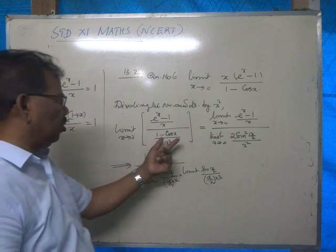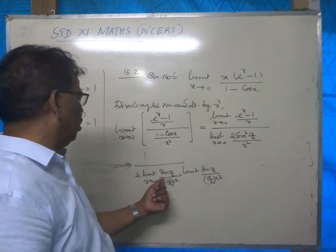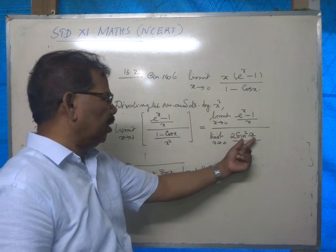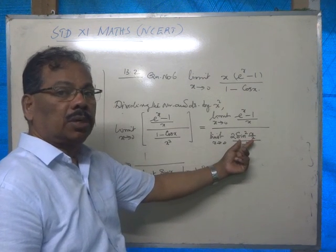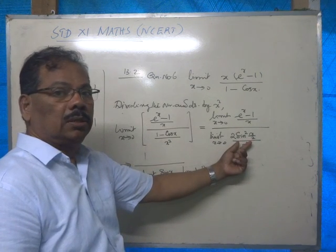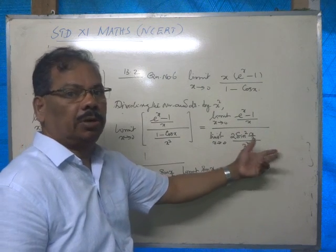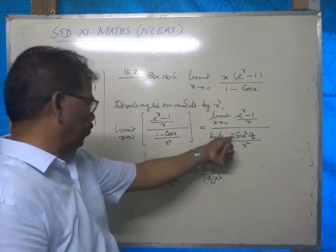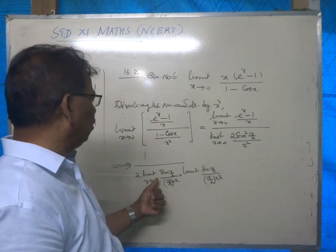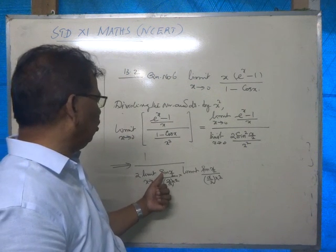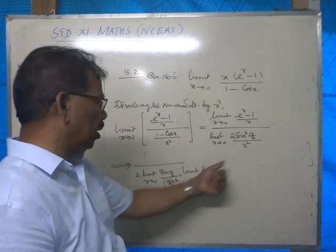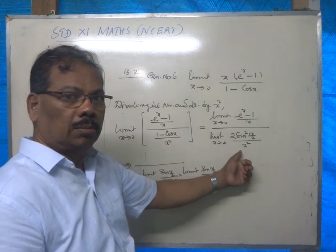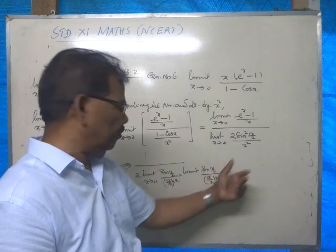Here, 1 minus cos x is 2 sin squared x by 2, and this sin squared x by 2 is written as sin(x/2) times sin(x/2). Therefore we get 2 times limit x tends to 0 of sin(x/2) by (x/2), where the denominator x squared is written as x times x.